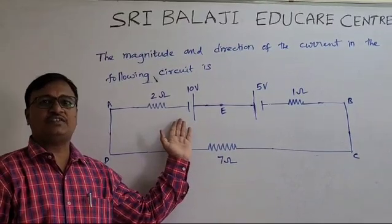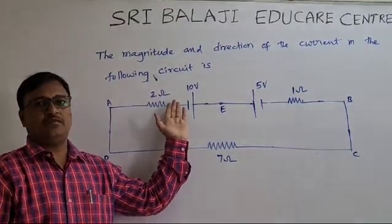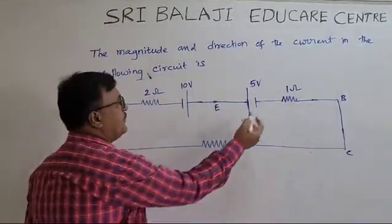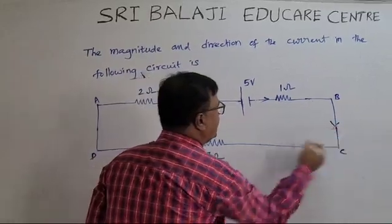Hence, the current flows in the direction of the larger magnitude. Current flows from 10V to 5V. Therefore, the direction of current will be like this, my dear students.